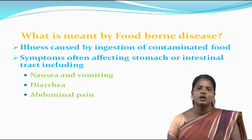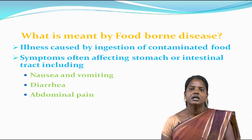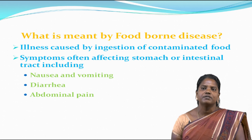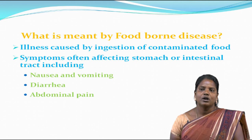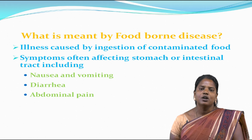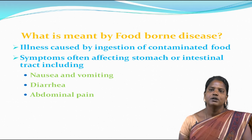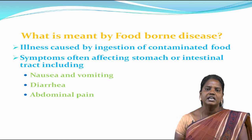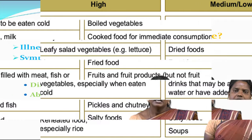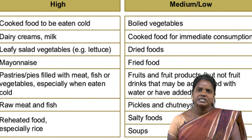Foodborne disease is commonly defined as illness caused by the ingestion of contaminated food, with symptoms affecting the stomach or intestinal tract — including the large intestine or small intestine — depending on the causative agents. Symptoms include nausea, continuous vomiting, diarrhea, and abdominal pain.